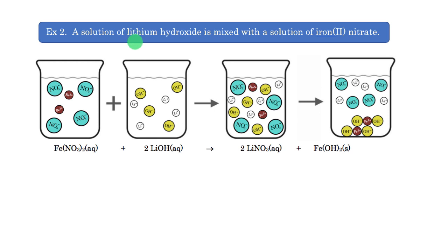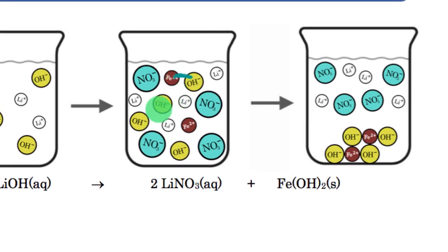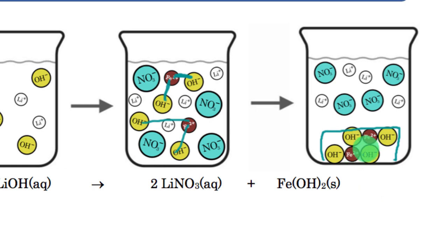Let's take a look at another example. We have lithium hydroxide mixed with iron(II) nitrate. Notice there are two nitrates for every iron, and one hydroxide and one lithium for each of those ions. When I mix them all together, it's going to be the iron and the hydroxide ions that come together to form the solid. The lithium and nitrate are spectator ions — they're not doing anything in this overall reaction.